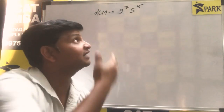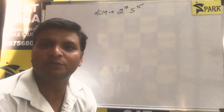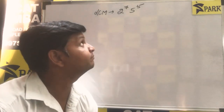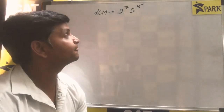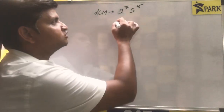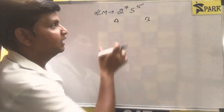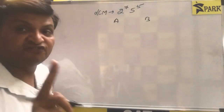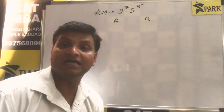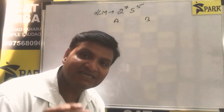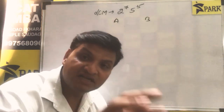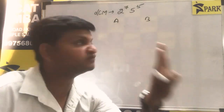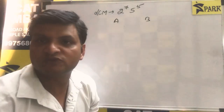Okay friends, let's have a look at this question. This is a question from QB902 and the question says: how many pairs of numbers have LCM 2 raised to 7 and 5 raised to 5? Suppose that the two numbers are A and B. There can be two possible cases. The first case is the highest power of 2 as well as the highest power of 5 is derived from the same number. The second case is the highest power of 2 comes from A whereas the highest power of 5 comes from B.